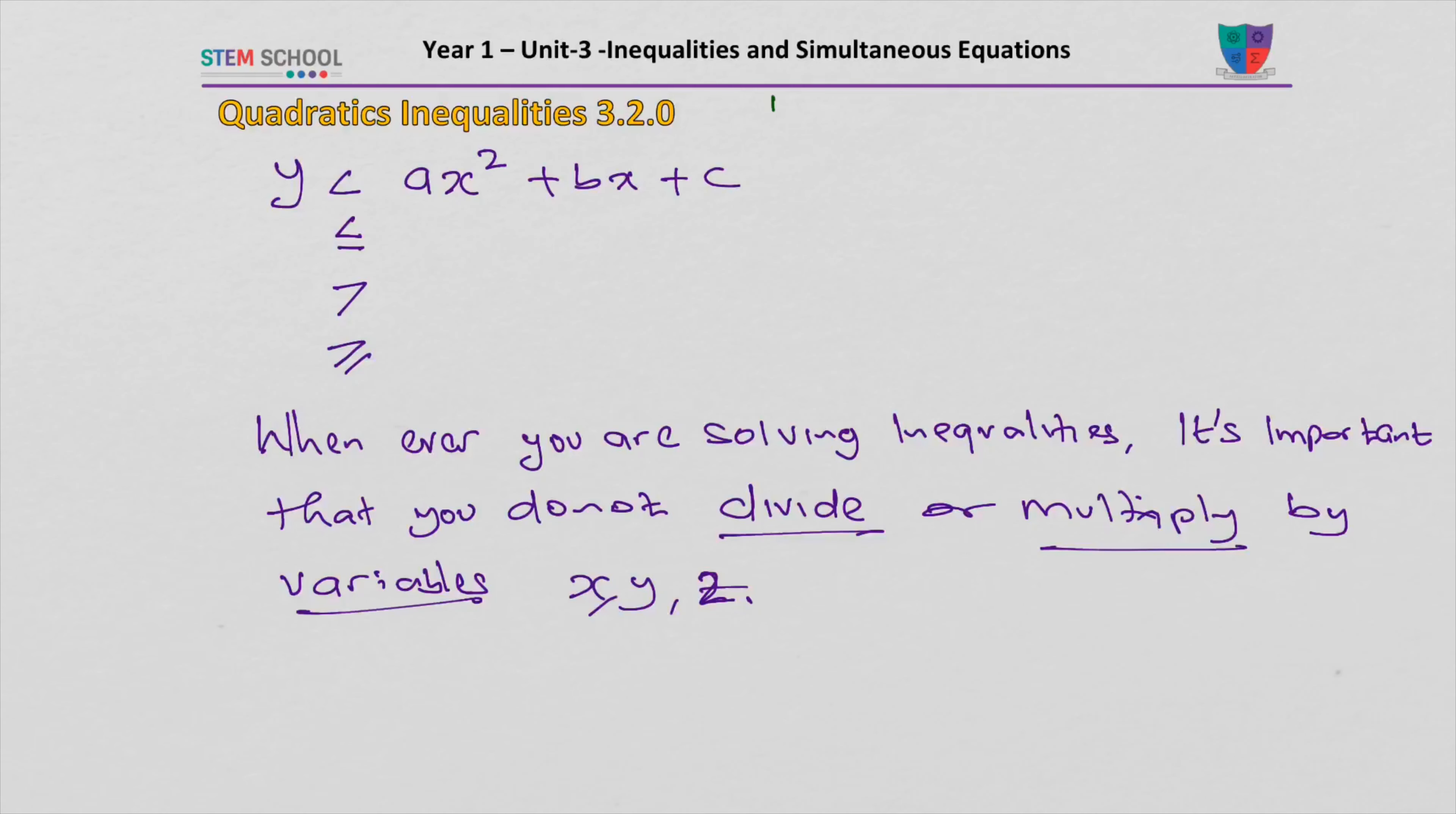If you have an X as a denominator, such as 2 over X less than 1, you have to multiply both sides by X squared. And that will become 2X squared over X less than X squared. Then of course we cancel X, and then you'll get 2X less than X squared. So that's the only time you multiply if the denominator variable is higher than the numerator variable.